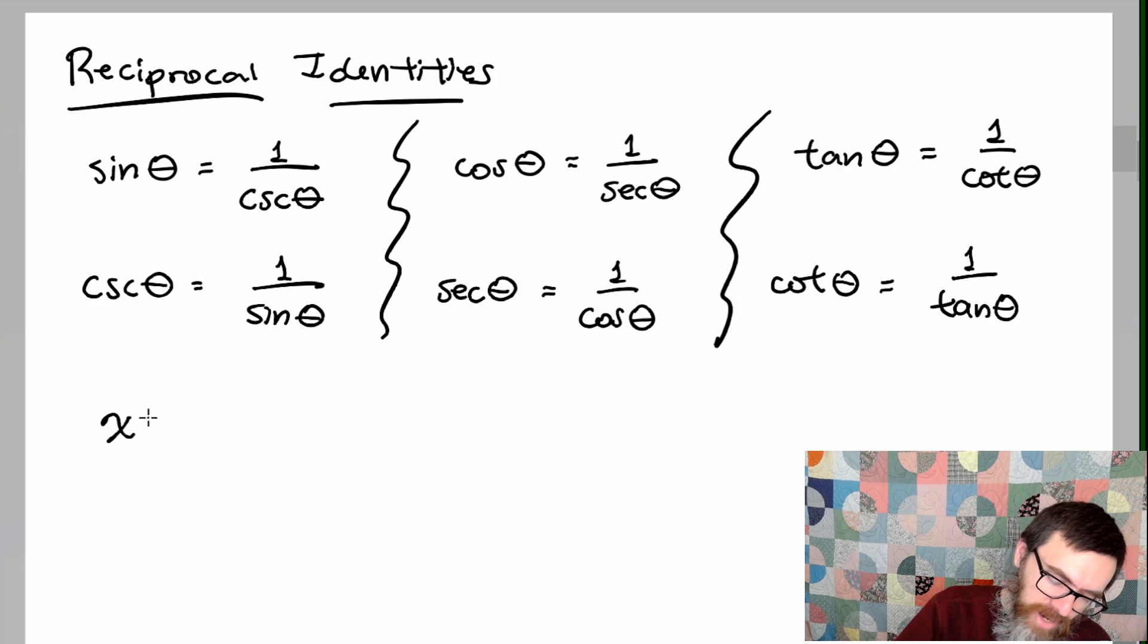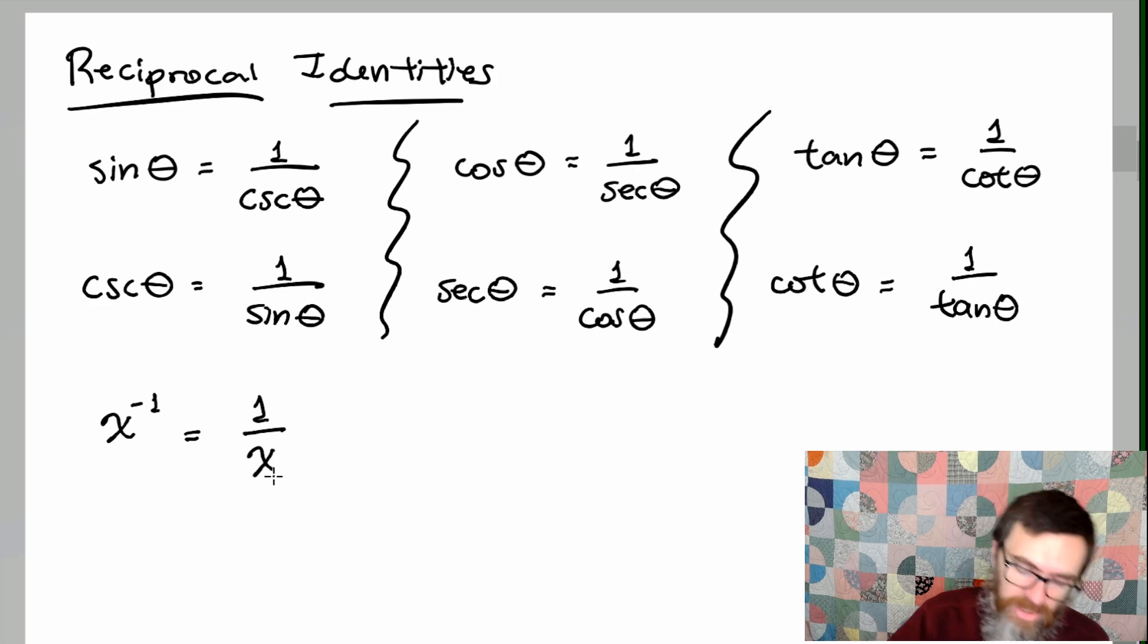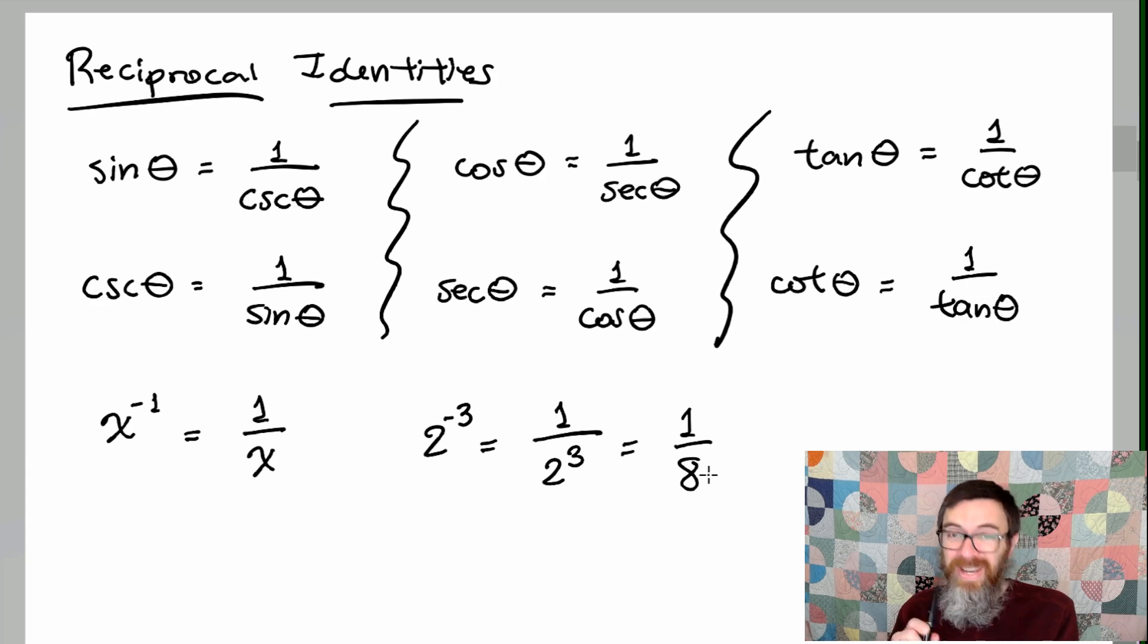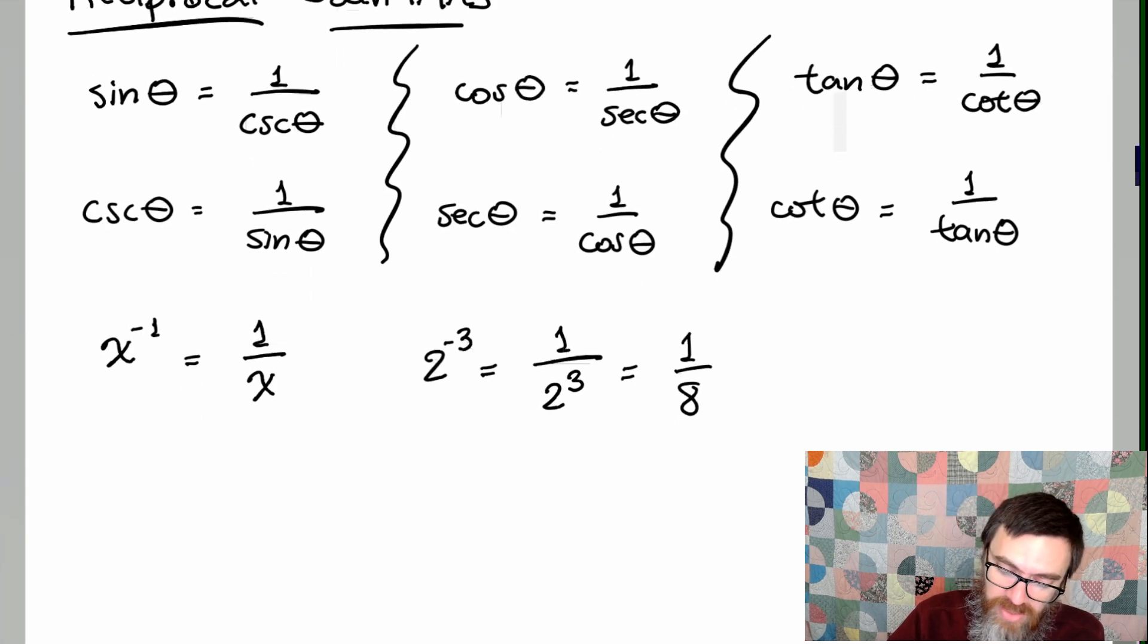So in algebra if I write x to the negative first, that means we are doing the reciprocal and you would have 1 over x. Like if I write 2 to the negative third, you would write that as 1 over 2 to the third, so that you could evaluate that and get 1 over 8. We don't really want to use the same negative sign around these guys because it can make things very very awkward and very confusing.